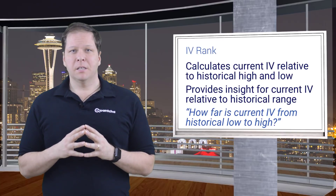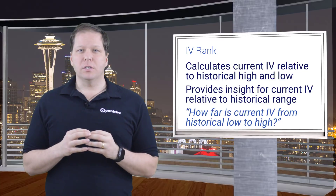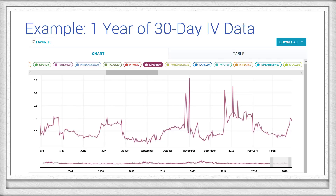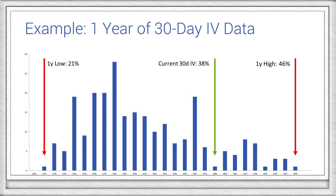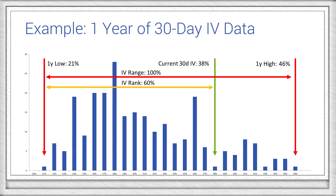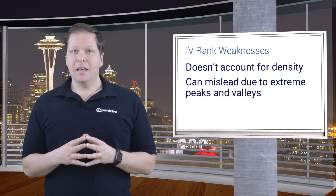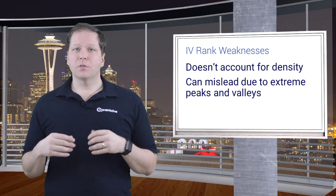First up is IV rank. This metric calculates the position of the current implied volatility relative to its historical range. It answers the question: how far is the current volatility from its historical low to high? Here's an example that uses one year of historical 30-day implied volatility readings. If we convert this into a histogram, we can more easily see the range and density of the values. The range is from 21 to 46%, putting the current 38% observation toward the higher end. The full range from low to high gives us an IV rank of 60%. There are a few drawbacks to using IV rank — it doesn't account for the historical density or magnitude of past volatility moves. It can also be skewed by extreme values, resulting in misleading data.